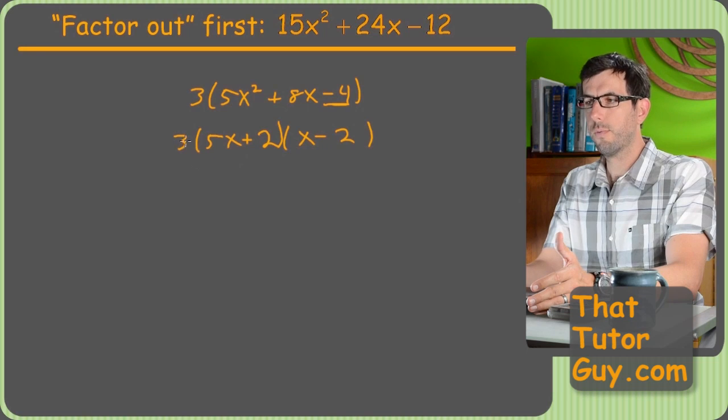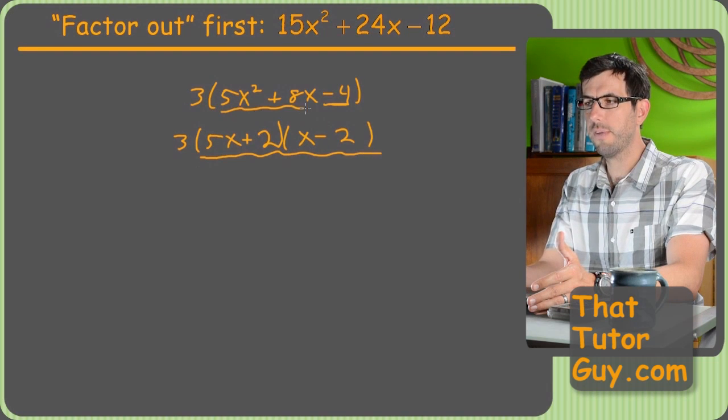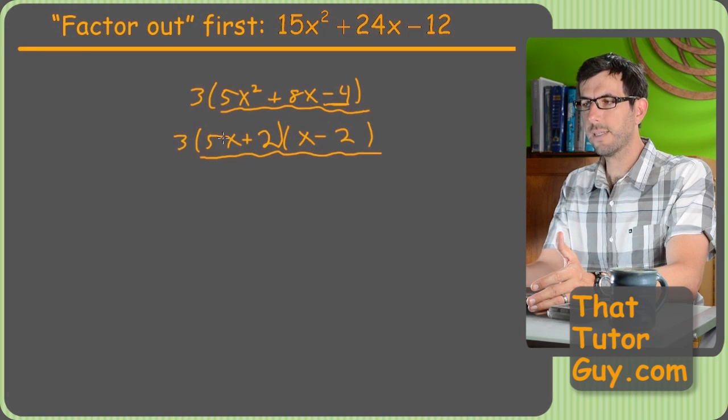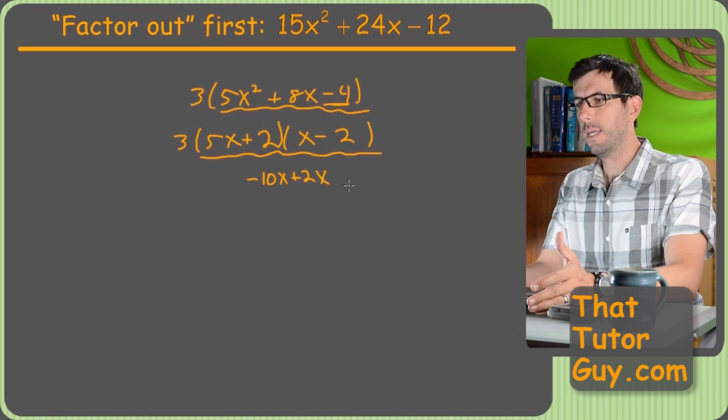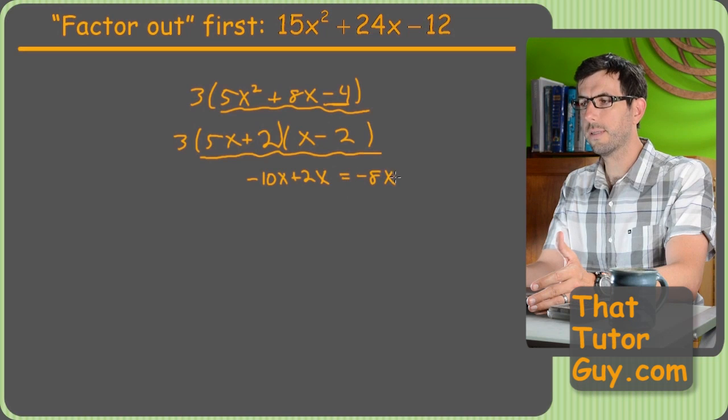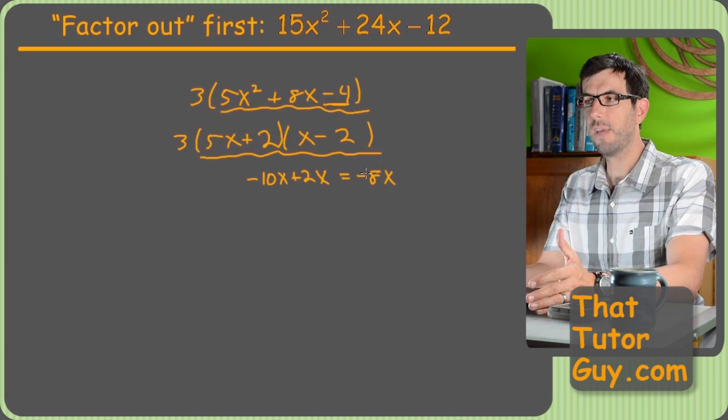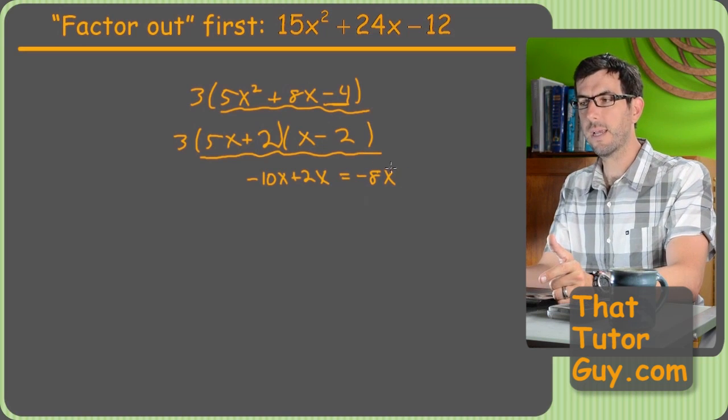All right, so if we foiled this out, we're going to ignore the 3, because right now we're just trying to see if this stuff right here multiplies to this stuff in here. I'll get 5x squared, obviously. Then I'll get 5x times negative 2 is negative 10x. And then plus 2x is, oops, negative 8x. All right, honestly, I got lucky on this one, because negative 8x, while not the right answer, I need a positive 8x. I have a negative 8x.